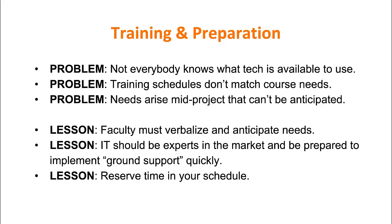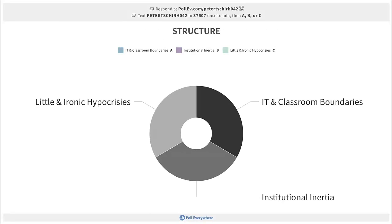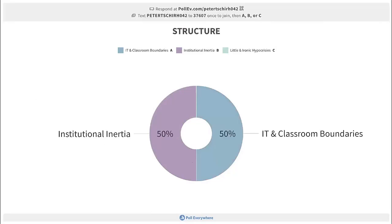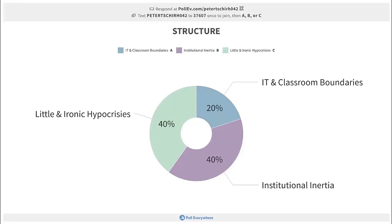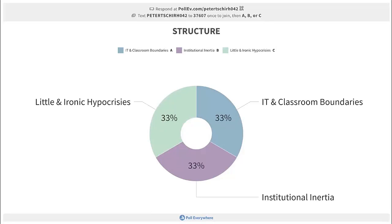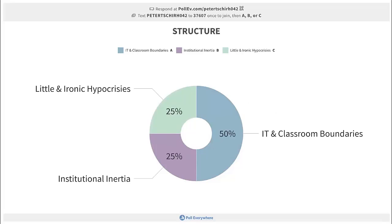We have your third audience choice moment—choose between: IT classroom boundaries, institutional inertia, and the little ironic hypocrisies that come with open pedagogy. IT classroom boundaries wins. Every institution, as you all know, has very different sets of guidelines. When Peter, Karen, and I worked together at Colgate, we figured out a way to work together. Then Peter went to Texas State and the hurdles he had to overcome were very different.